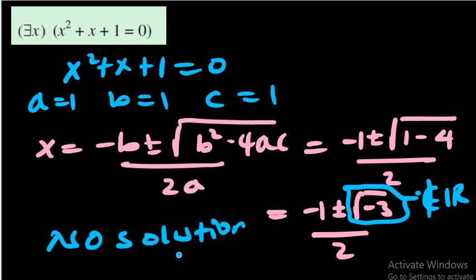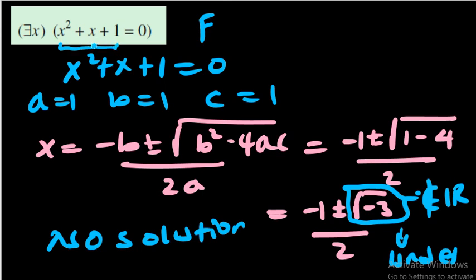The square root of a negative number falls under the domain of complex numbers, which has meaning there, but under the set of real numbers it is undefined. Therefore, this statement is false — we cannot find even a single real number x that makes this equation true. The quadratic equation has no real solution.